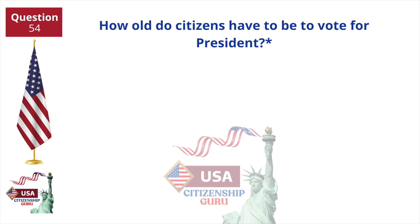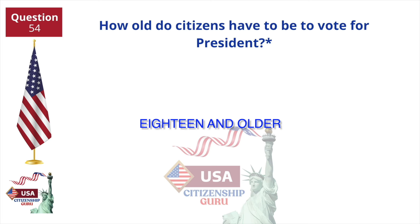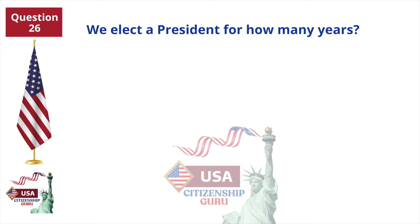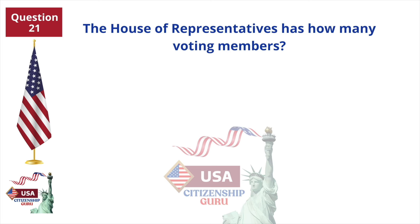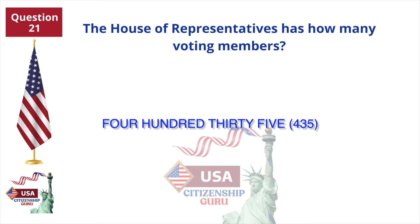How old do citizens have to be to vote for president? 18. We elect a president for how many years? 4. We elect a U.S. representative for how many years? 2. The House of Representatives has how many voting members? 435.